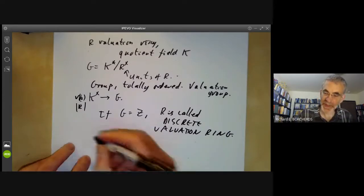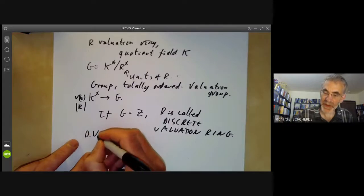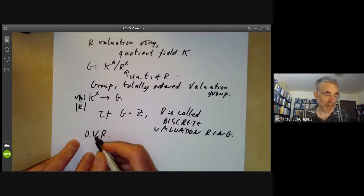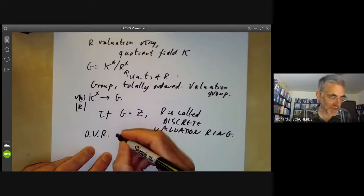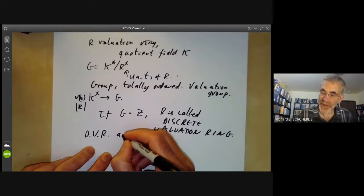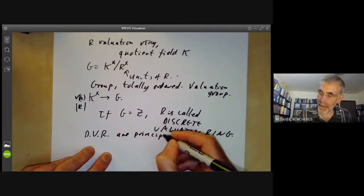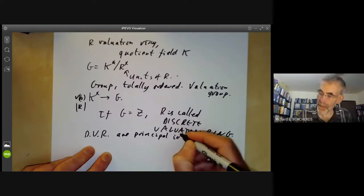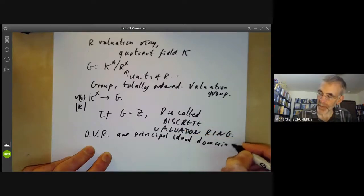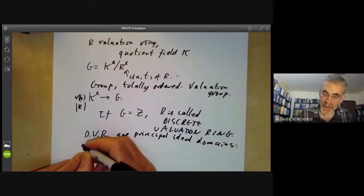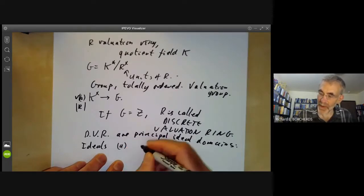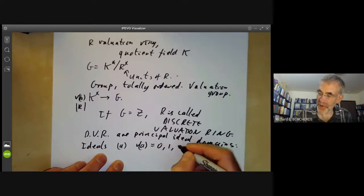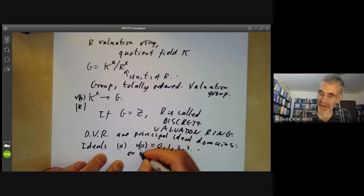And both examples I gave earlier were discrete valuation rings. Discrete valuation rings, often abbreviated DVR because discrete valuation ring is rather a lot to write out. So discrete valuation rings are principal ideal domains. The ideals are just the elements A where the valuation of A is 0, 1, 2, 3, and so on. Or we can take the ideal 0.